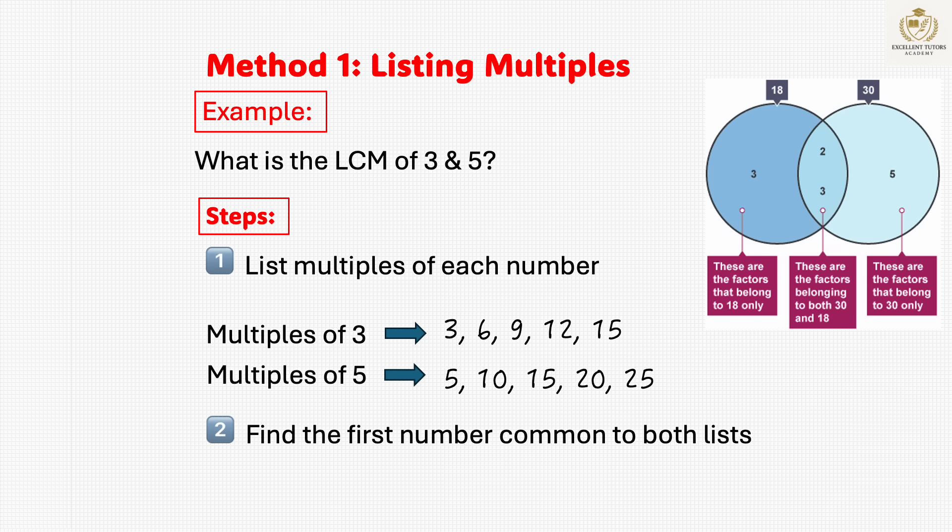Step 2: Look for the first number that appears in both lists. The first number they share is 15. So the LCM of 3 and 5 is 15.